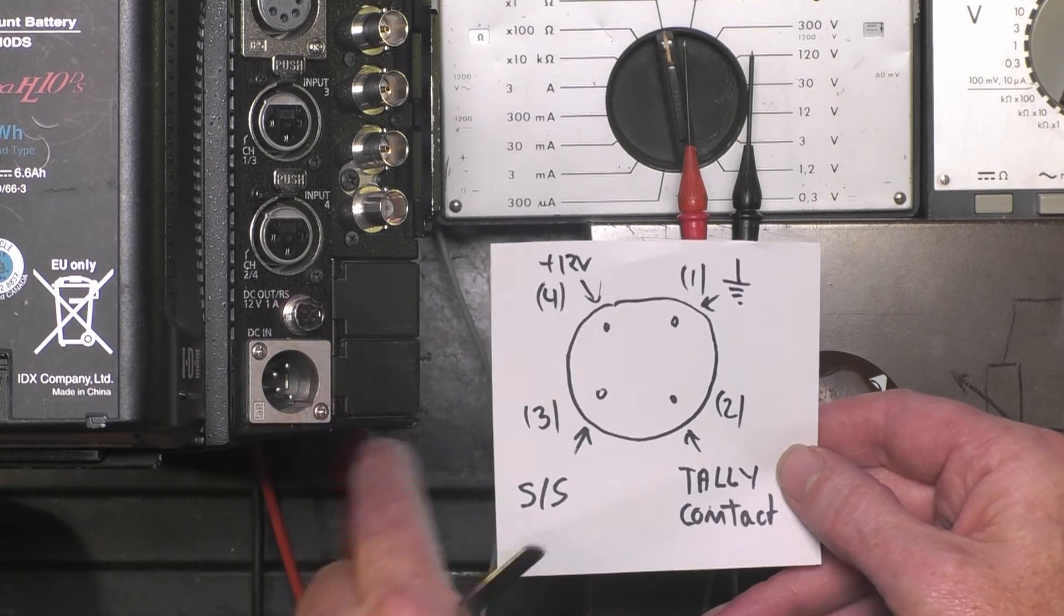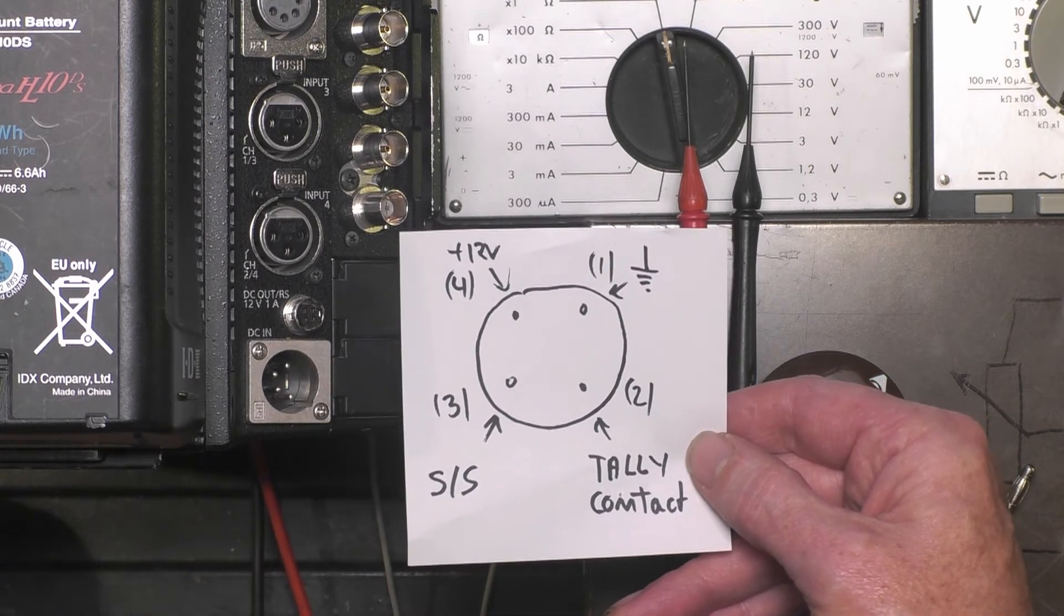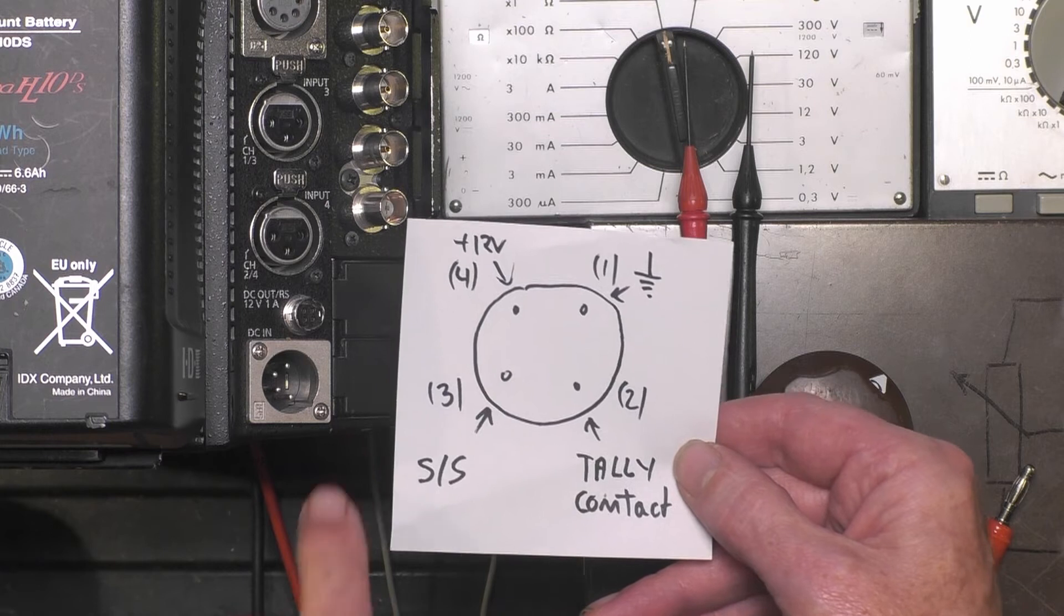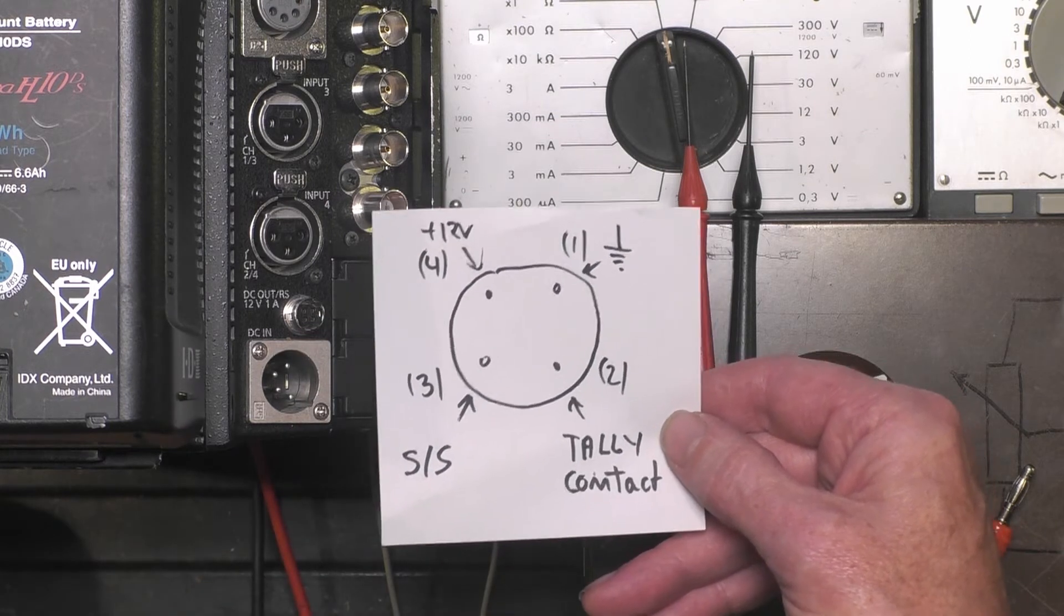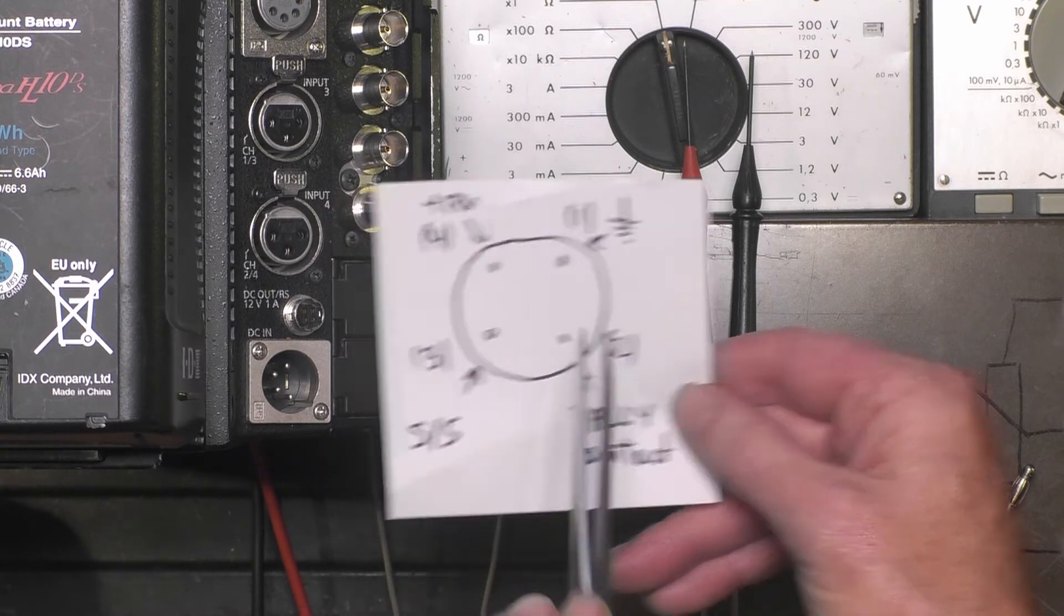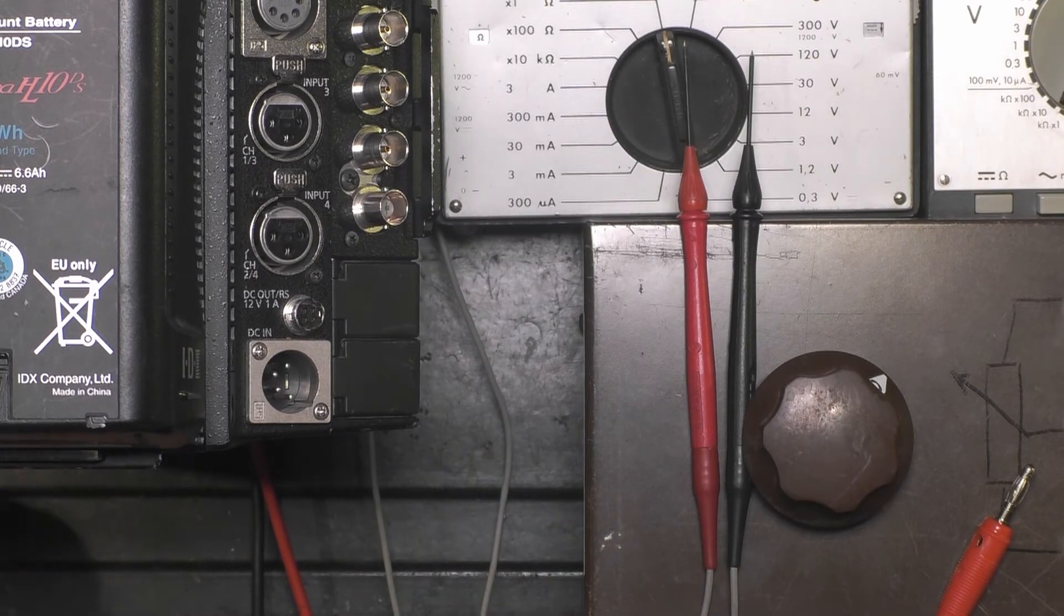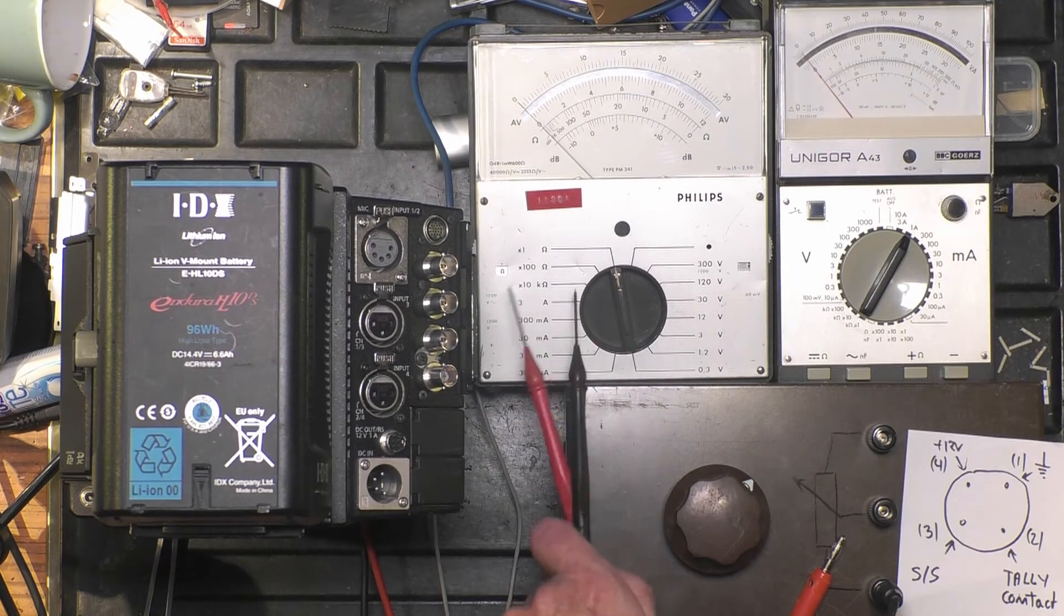If you have very good eyes, normally the numbers are written, but it's very small. I like to confirm with the ohmmeter where pin 1 is. How do we do that? That is quite simple. You need probes with very fine tips.